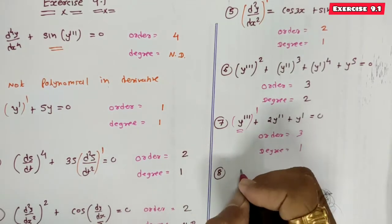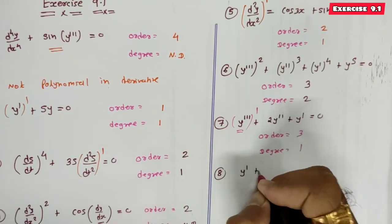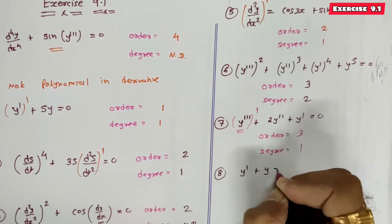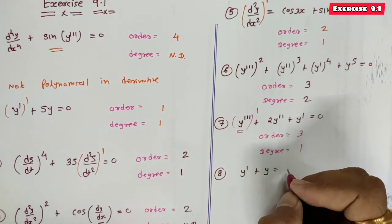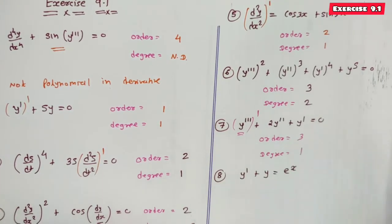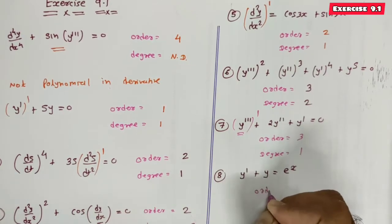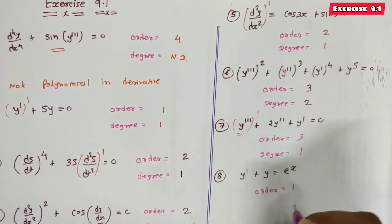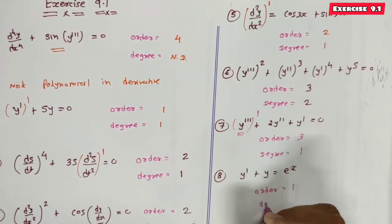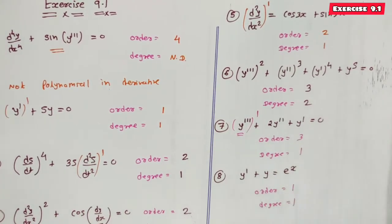Equation 8: y' + y = eˣ. For this case, order is 1 and degree is also 1.